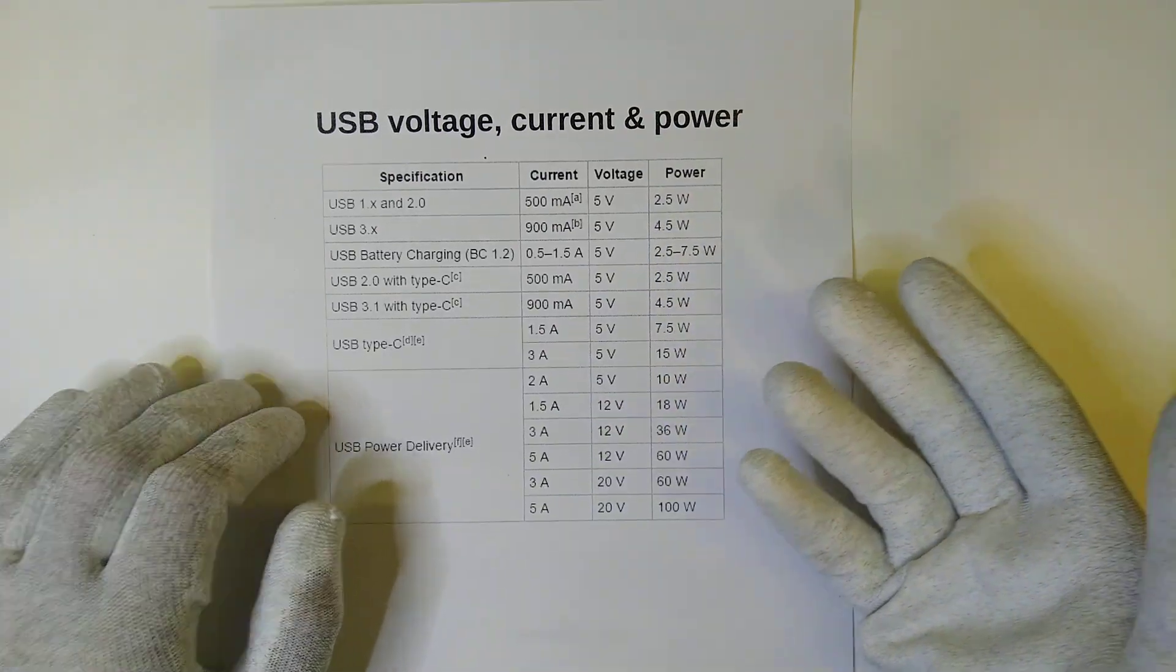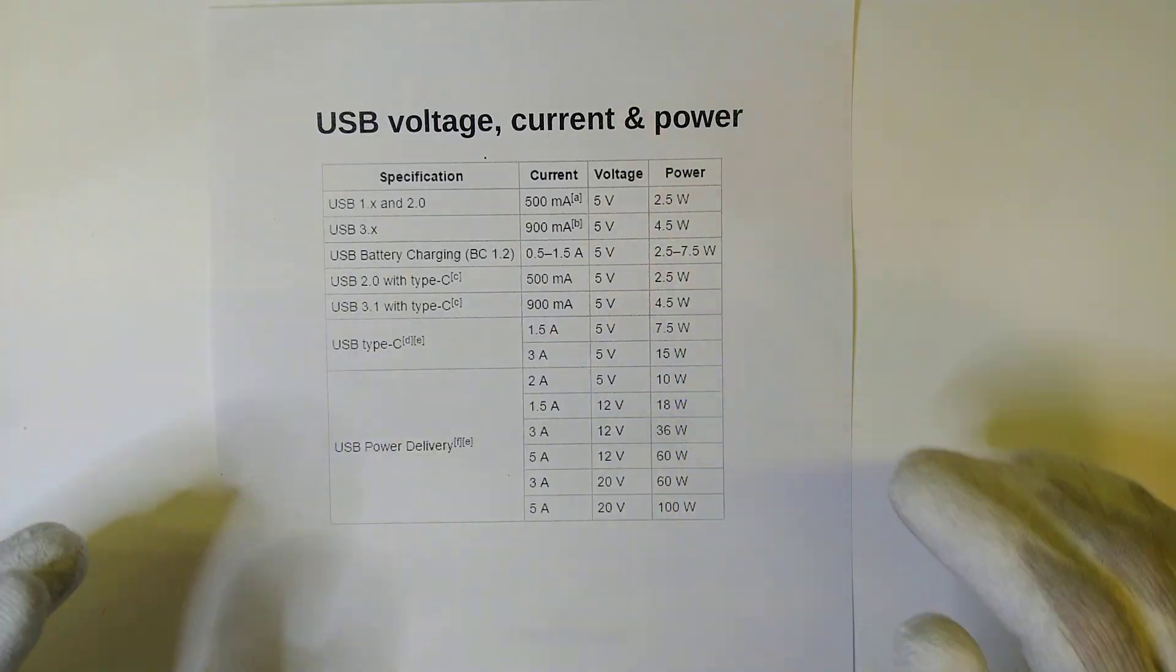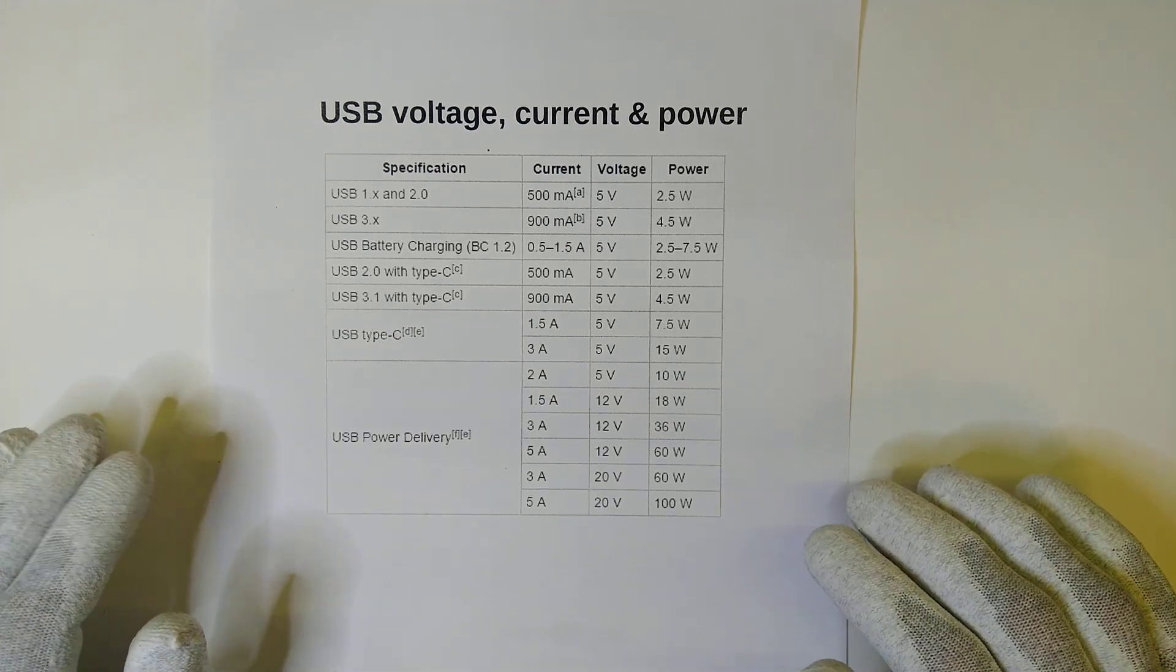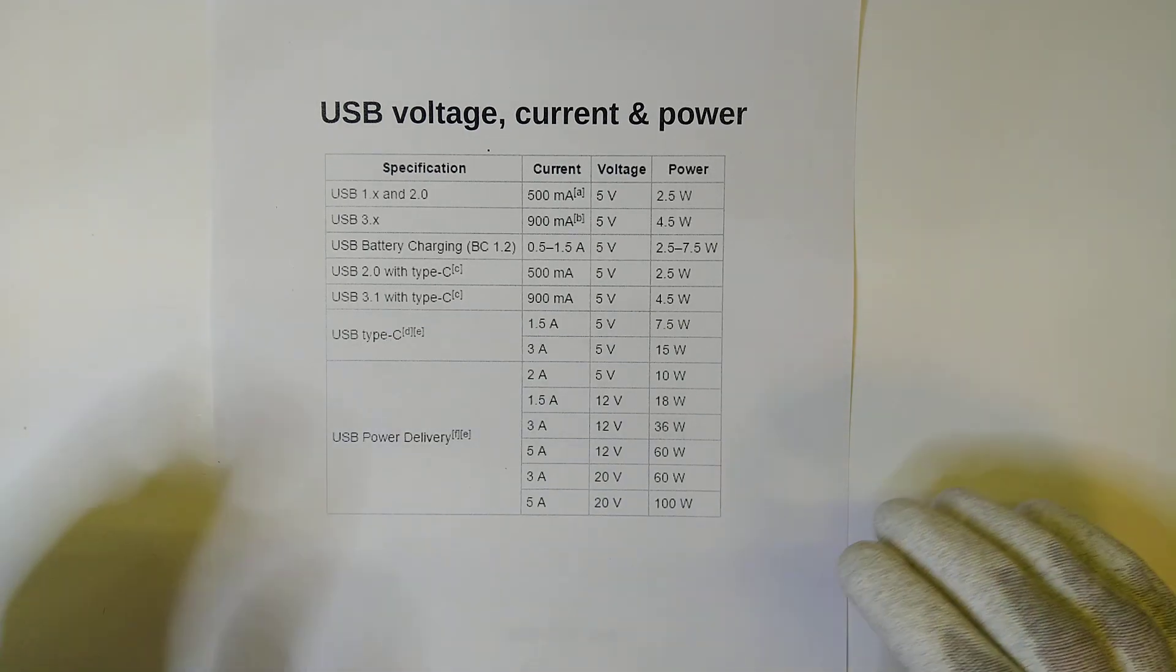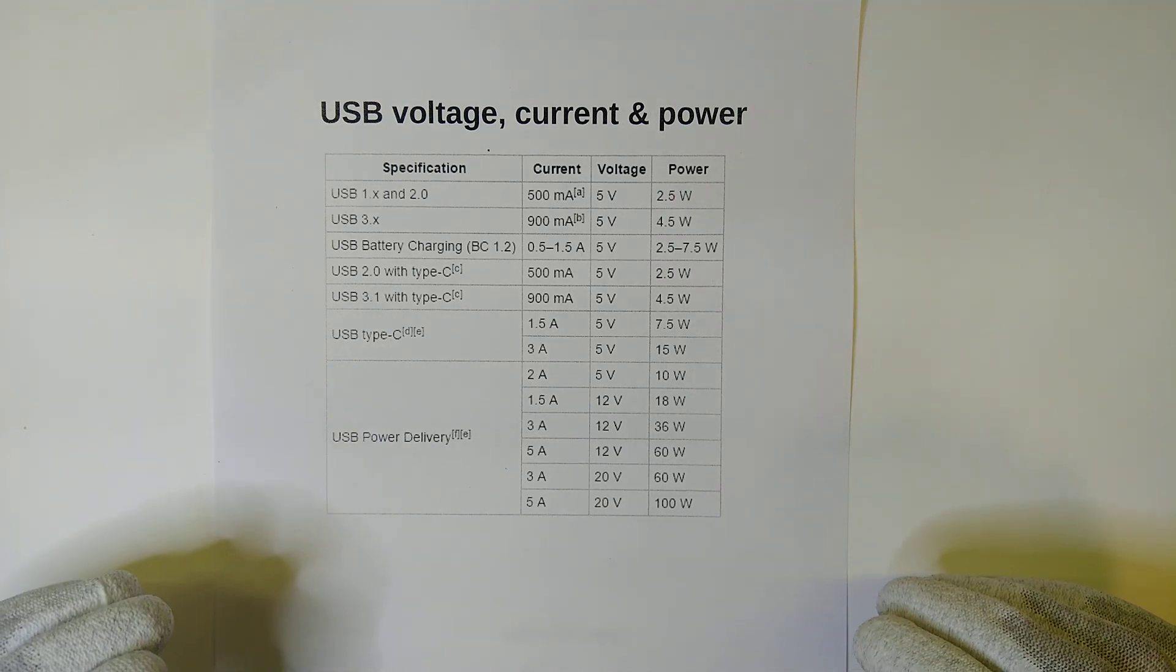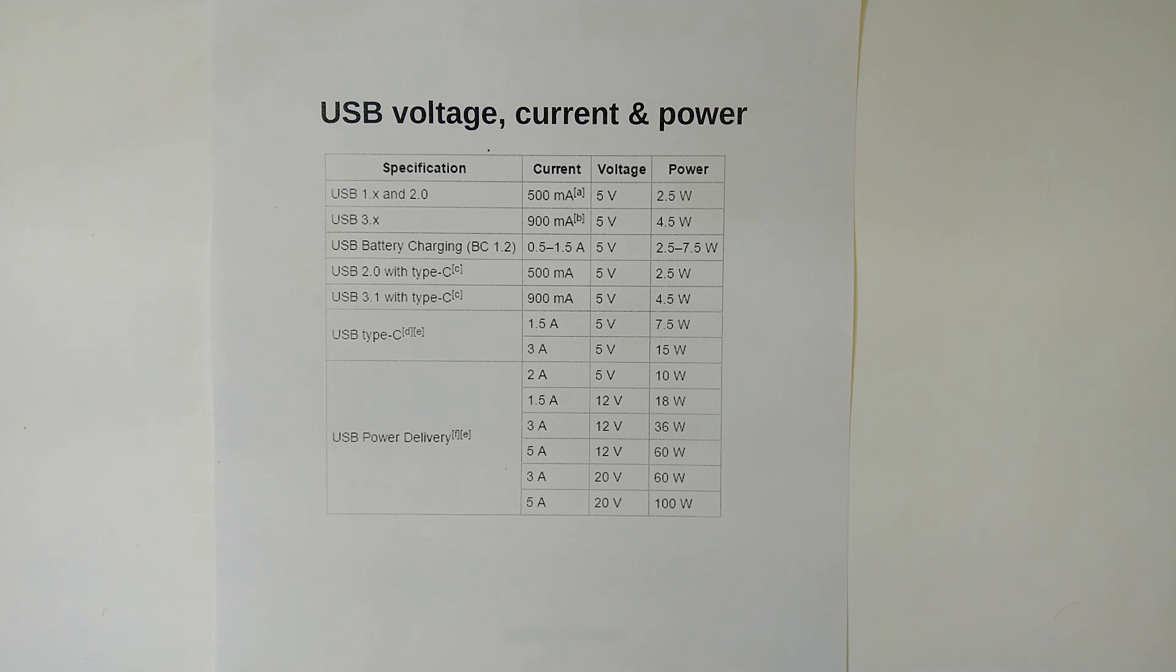The 500mA current rating at 5V voltage brings us to a power of 2.5W maximum. What I've just shown you is a lot more because regular USB chargers nowadays have like 3A or 2A, 2.5A, something around that in the ballpark. So how do they actually do that?